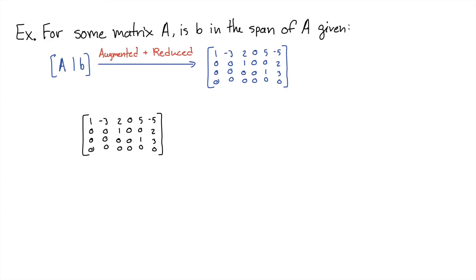For our first question, we're asked, for some matrix A, is B in the span of A, given that the augmented matrix of A and B, after it's reduced, is this right here? It's already reduced, so we can just assign variables to the columns. We don't assign a variable to this last one because that's B. Then we just write out the rows of the matrix as linear equations.